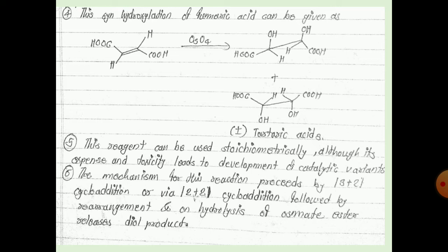This reaction can be used stoichiometrically. However, its expense and toxicity led to the development of a catalytic variant. The mechanism proceeds by a 3+2 cycloaddition, or a 2+2 cycloaddition followed by rearrangement. On hydrolysis of the osmite ether, the diol product is released.